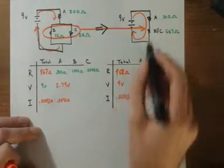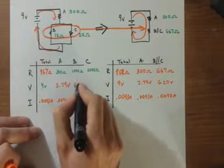That's the voltage drop across B and C. Remember they are in parallel to each other, they get the same voltage drop.